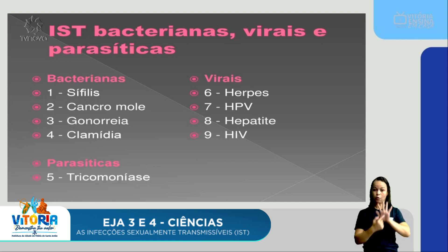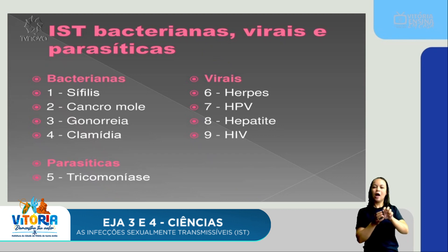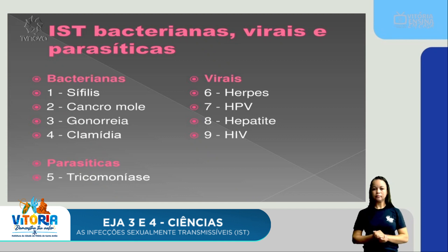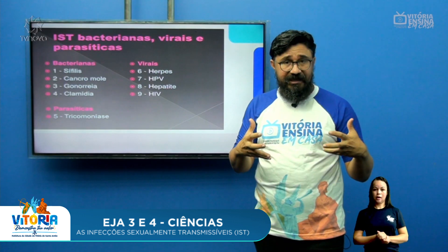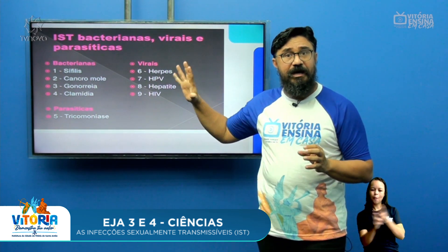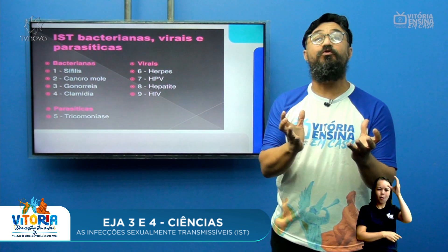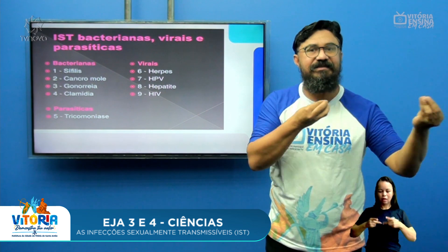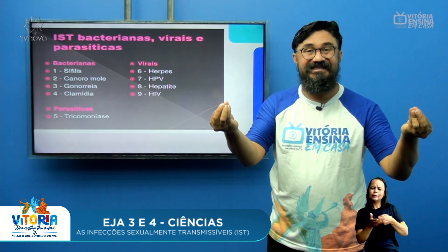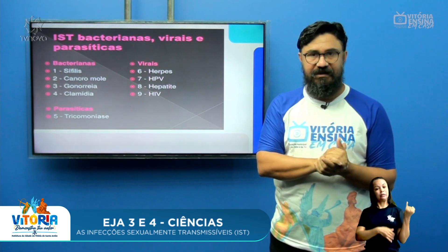As ISTs podem ser de ordem bacteriana, viral ou parasitária. No caso da parasitária, em destaque, temos a tricomoniase, causada pelo protozoário, que faz parte do reino Protista. Nossa aula tem que ter relação com outros conhecimentos — aqui também tem um pouco de taxonomia, de classificação dos seres. Cabe sempre fazer esse intercâmbio, essa relação íntima e importante no nosso processo de aprendizado. Não tem como fragmentar o conhecimento; ele é um grande tecido que está o tempo todo dialogando com outros saberes.